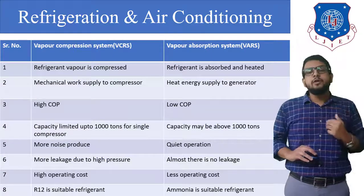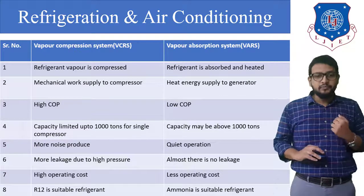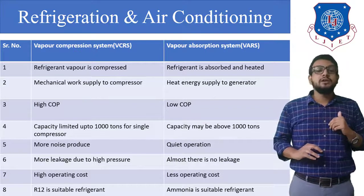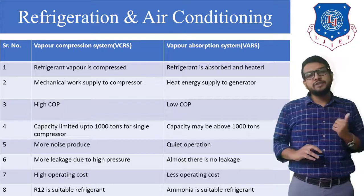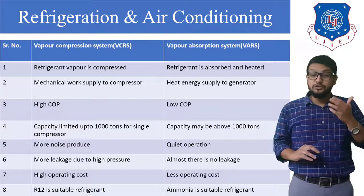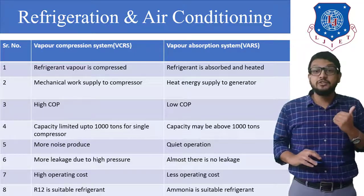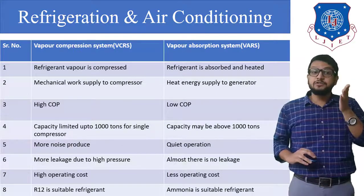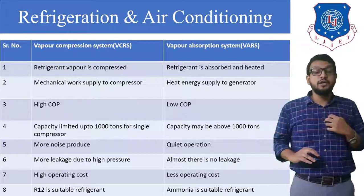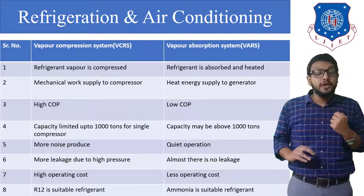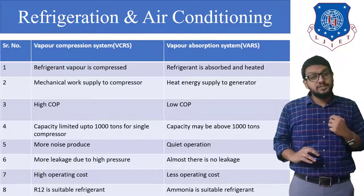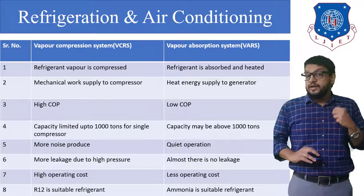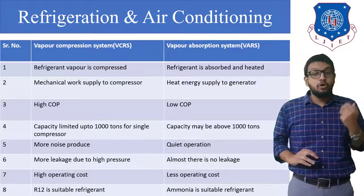Third, a high coefficient of performance (COP) can be obtained in the VCR system, whereas the COP is quite low in the VAR system. Fourth, the capacity of the VCR system is limited to around 1000 tons for a single compressor, whereas the VAR system capacity exceeds 1000 tons — so the VAR system is used in large ice manufacturing plants, while the VCR system is used for domestic purposes. Fifth, more noise is produced in the VCR system due to the reciprocating compressor's piston motion, whereas the VAR system using a generator operates quietly.